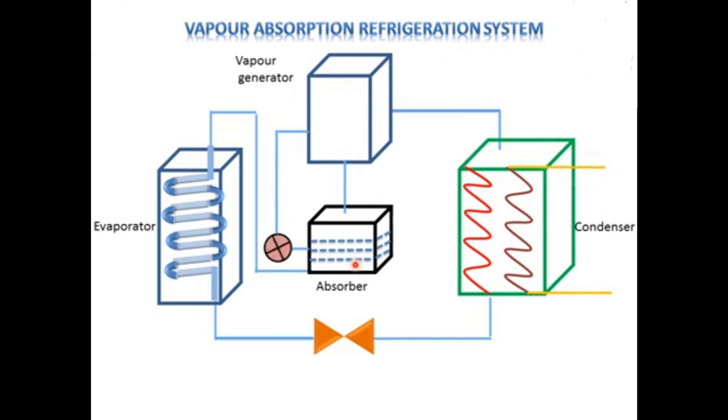Now the process starts from the absorber. Low Pressure Refrigerant enters the absorber. Here Lithium Bromide solution is already present which absorbs the refrigerant which is Ammonia. Now this weak solution is then sent to the pump.